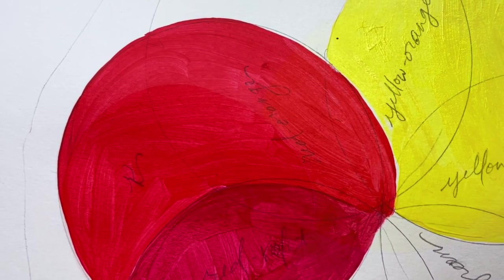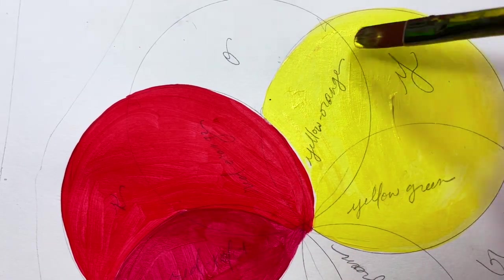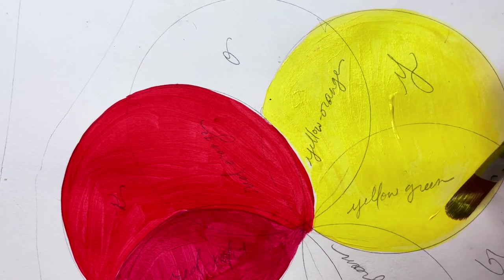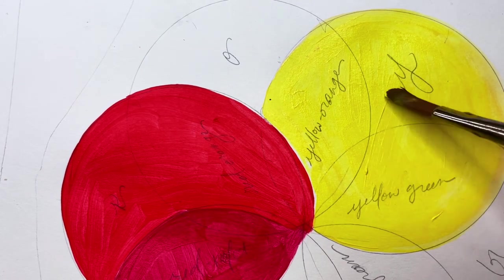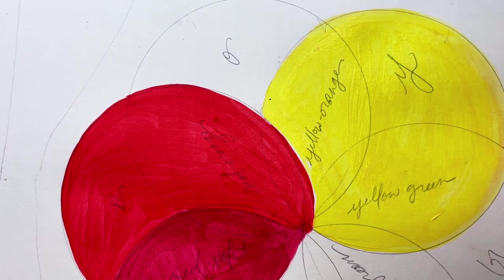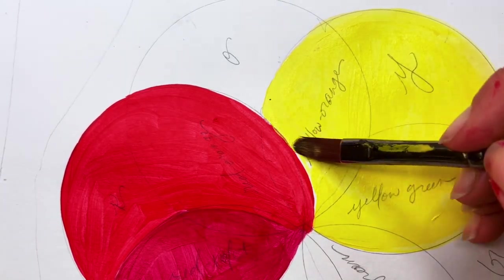This is absolutely going to hold true for blue as well. There is a more green-toned blue and a more violet-toned blue. A nice bright primary yellow will get you the majority of colors that you need for a 12-step color wheel.